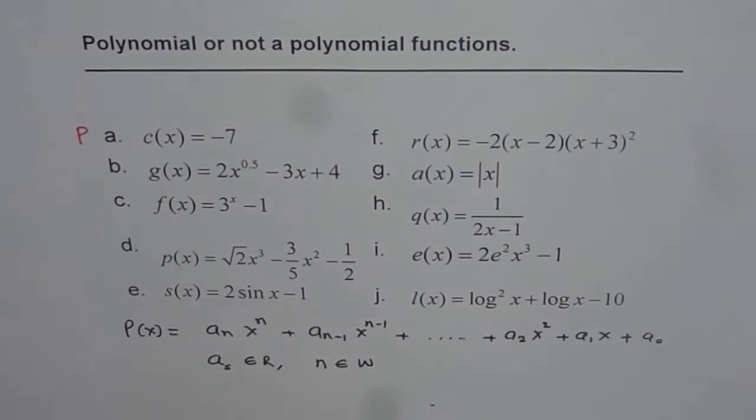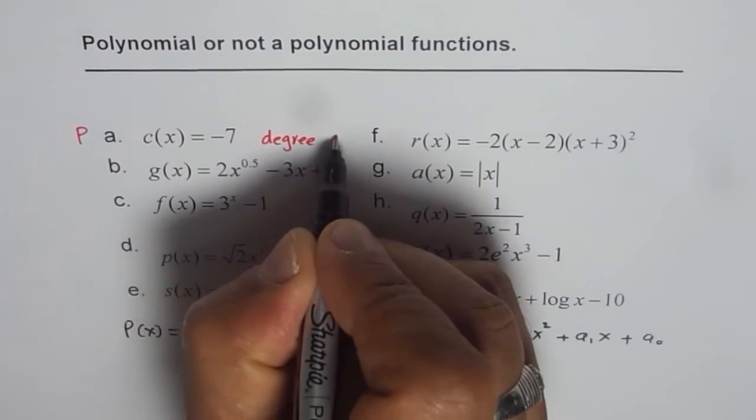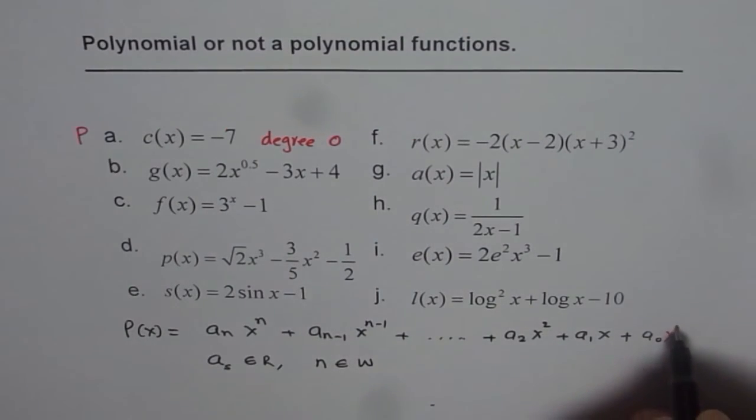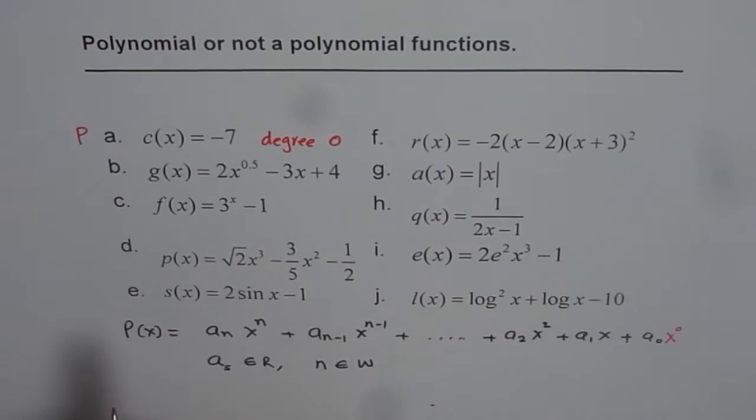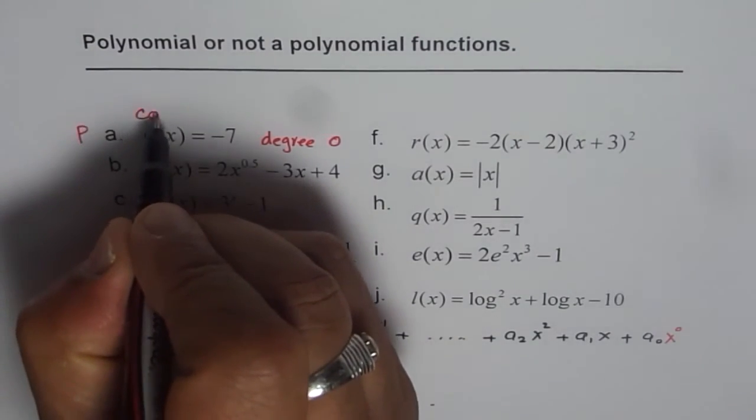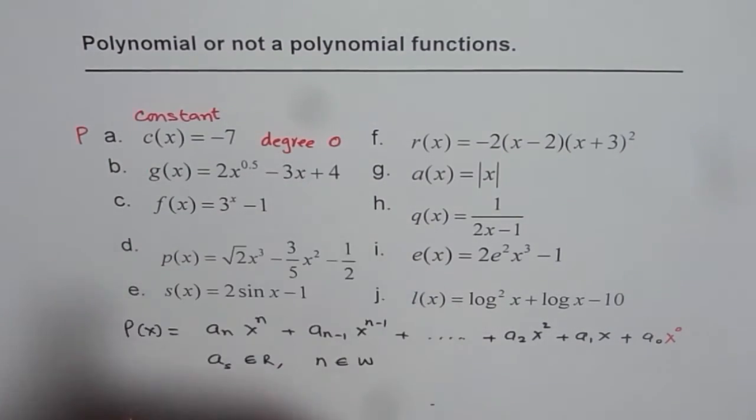So it is a polynomial. Let me write P for polynomial. And here the degree is how much? Polynomial of degree is 0. It is kind of important. A₀ is like x to the power of 0. Anything to the power of 0 is 1. So it is a constant polynomial. We can also call this a constant polynomial, and its degree is 0.